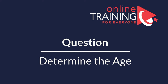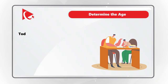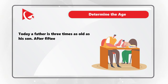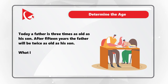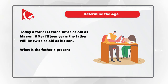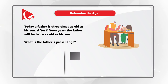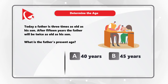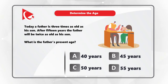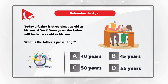Here is a frequent test problem where you need to determine the age of family members. Today, a father is three times as old as his son. After 15 years, the father will be twice as old as his son. What is the father's present age? Four choices: choice A is 40 years, choice B is 45 years, choice C is 50 years, and choice D is 55 years. Give yourself a little time to come up with the solution.